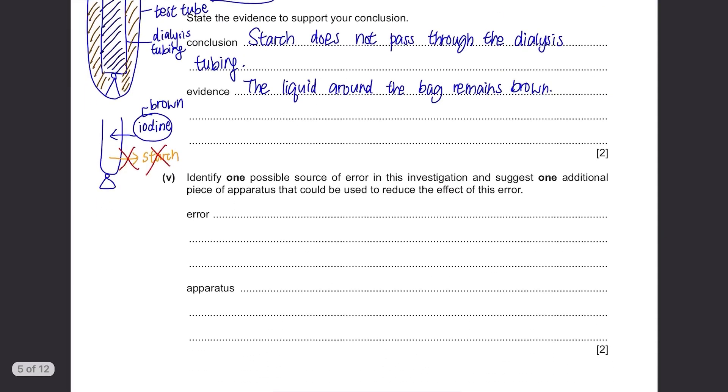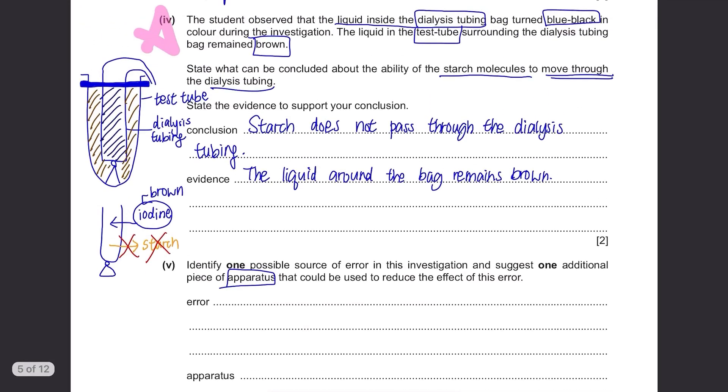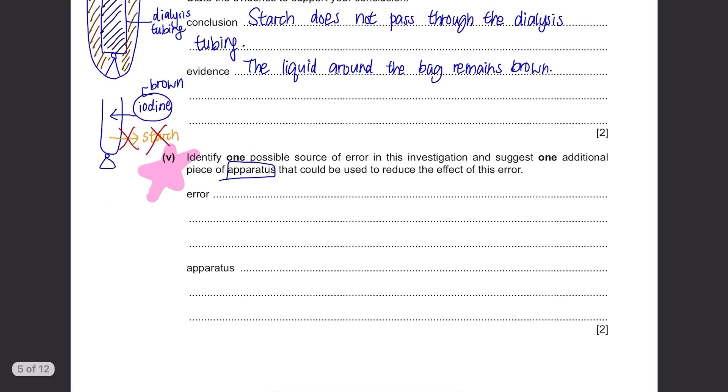Part E: Identify one possible source of error in this investigation and suggest one additional piece of apparatus that could be used to reduce the effect of this error. These two are the most popular questions in paper 6, they were probably in your exam too. First, think about the variable of this experiment. Is the variable properly controlled? It's the temperature in this case and remember, when we want to control the temperature, we always need to make sure that the temperature remains constant throughout the experiment. How do we do that? We use thermostatically controlled water bath. This answer is fixed. Temperature not being controlled throughout the experiment and using thermostatically controlled water bath as a solution. So memorize this.